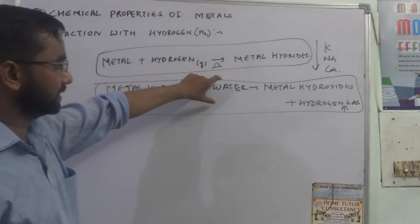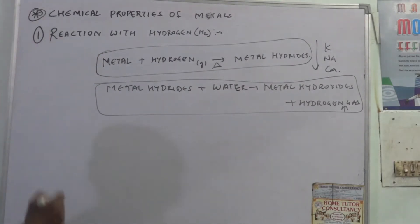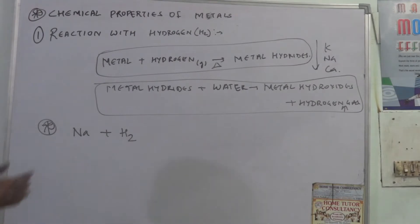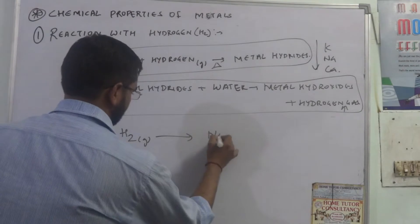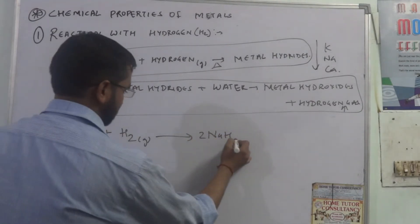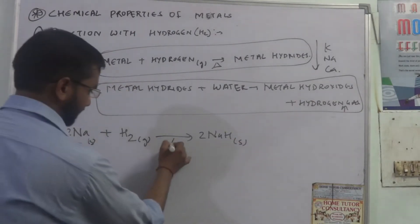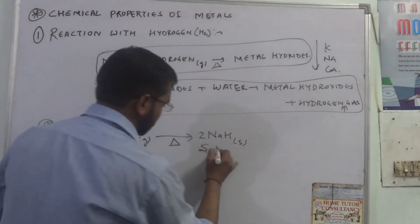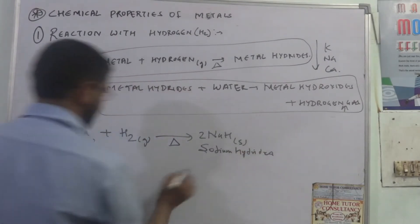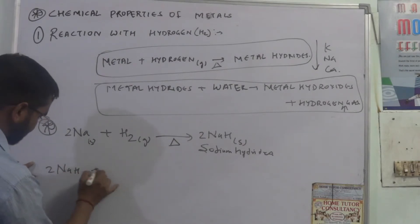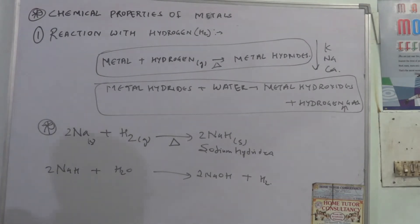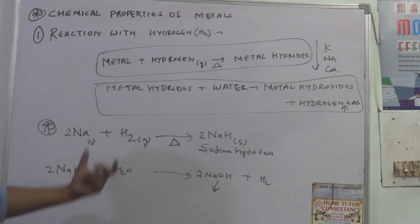For example, if we take sodium: sodium reacts with hydrogen gas to form sodium hydride. When sodium hydride reacts with water, it produces sodium hydroxide and hydrogen gas is evolved.